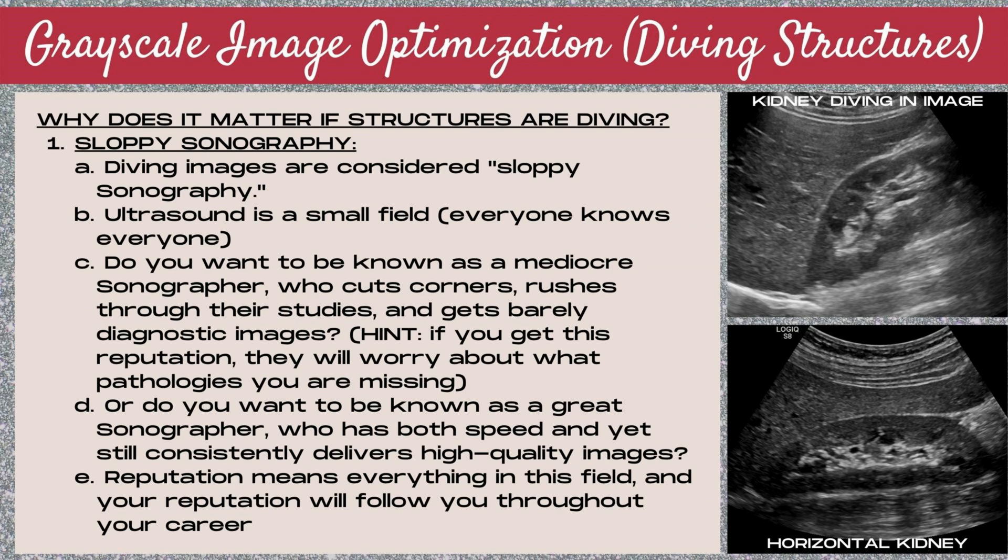Let's look at a couple more examples of vertical versus horizontal structures. The top image on the right is the kidney — a diving kidney, also known as a vertical kidney. You can see that one pole of the kidney is deeper on the ultrasound image than the other. In the bottom image, the kidney lies horizontally across the screen and both poles are at the same depth, making it a horizontal kidney.